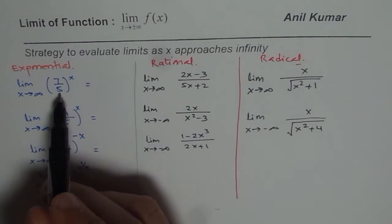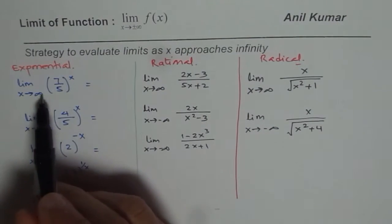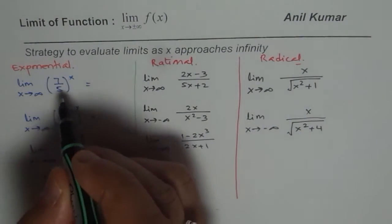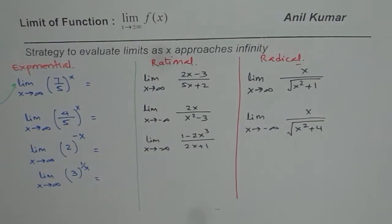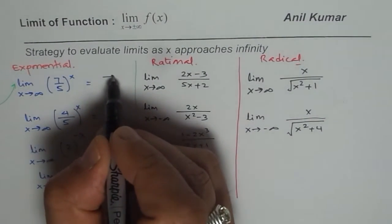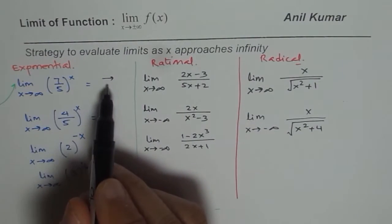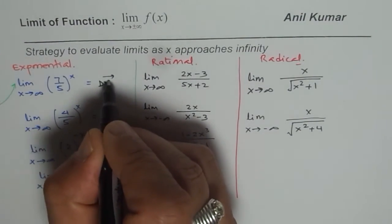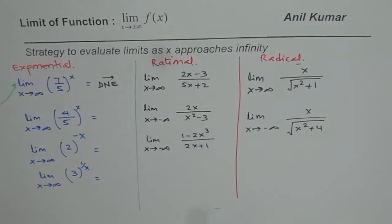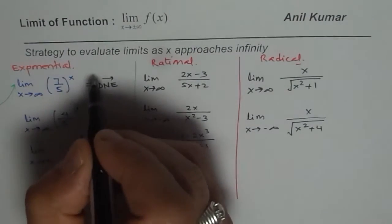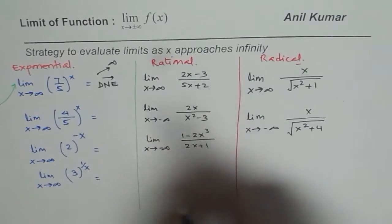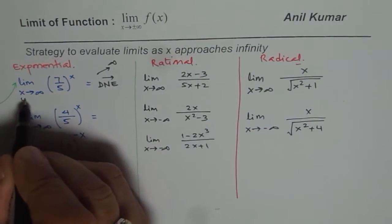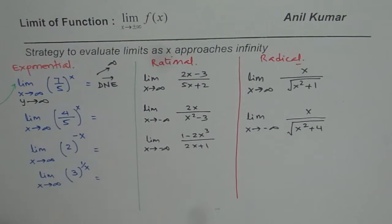The first one is 7 over 5 to the power of x. As x approaches infinity, you know it's an exponential function — it just keeps on growing, so it also approaches infinity. When a function grows unbound, it is not reaching a particular value. So we say that the limit does not exist. When x approaches infinity, y also approaches infinity, not to a fixed value.